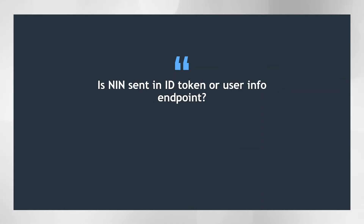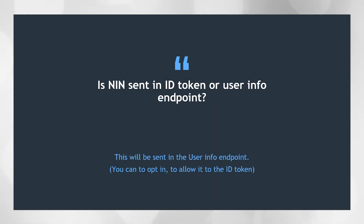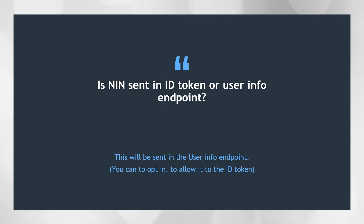Is the national identifying number sent in the ID token or the user info endpoint? This usually comes in the user info endpoint. But remember you need to add the NIN scope to your client in order to be able to retrieve it in the response. Also not every IDP will allow you to get the NIN from them without applying in advance - there are rules and regulations governing this and you have to check that per country. You can also opt in to allow it in the ID token for specific use cases. You can do this in the developer dashboard by setting 'allow user always to include user claims in ID token', but remember you don't want to do this unless you have to.